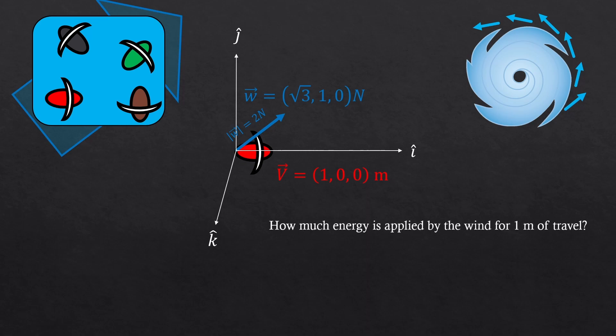How much energy would be applied to our sailboat for 1 meter of travel? It would be just the force component in the same direction times the distance, right? Which should be square root of 3 joules.